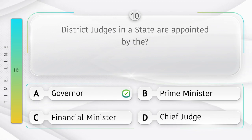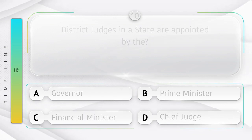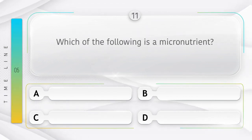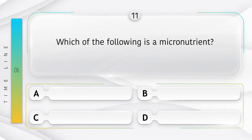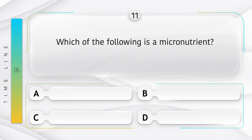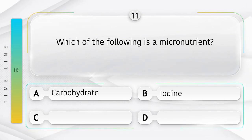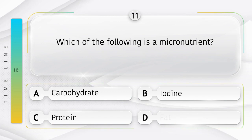Which of the following is a micronutrient? Option A: Carbohydrate, B: Iodine, C: Protein, D: Fat. Answer is option B, Iodine.